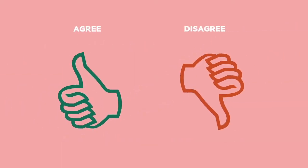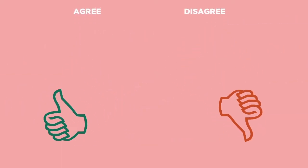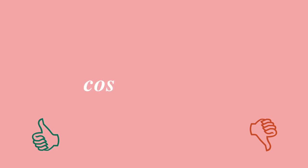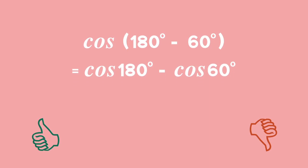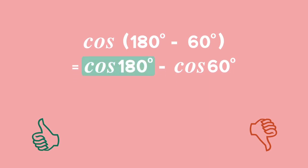Consider the following explanation and decide if you agree or disagree. To work out the cosine, or cos, of 180 degrees minus 60 degrees in brackets, you multiply the cosine into the brackets to get cos 180 degrees minus cos 60 degrees. Using special angles, you get cos 180 degrees equal to minus 1 and cos 60 degrees equals a half. Simplifying, we get an answer of negative 1 and a half.